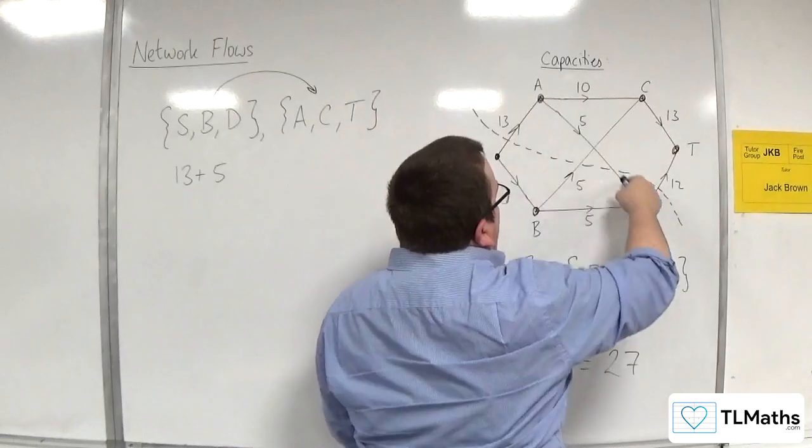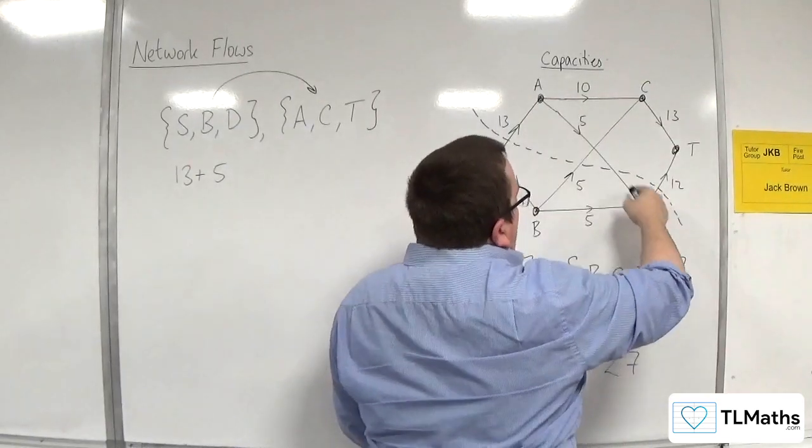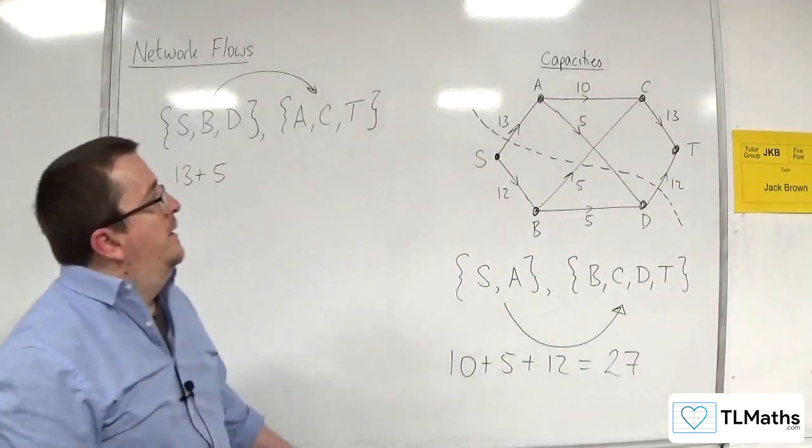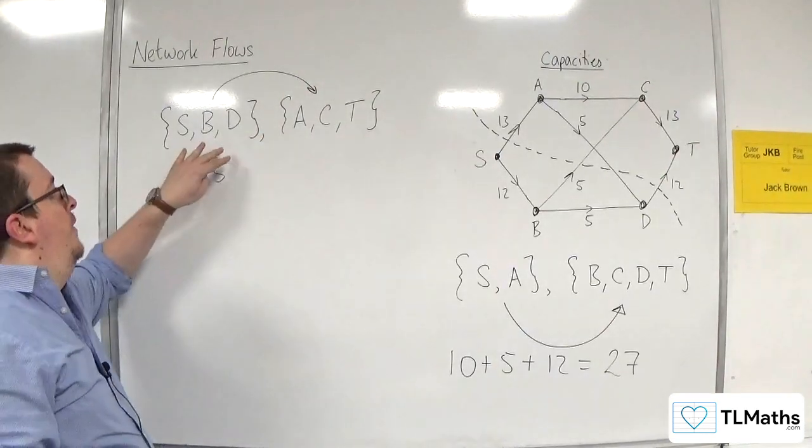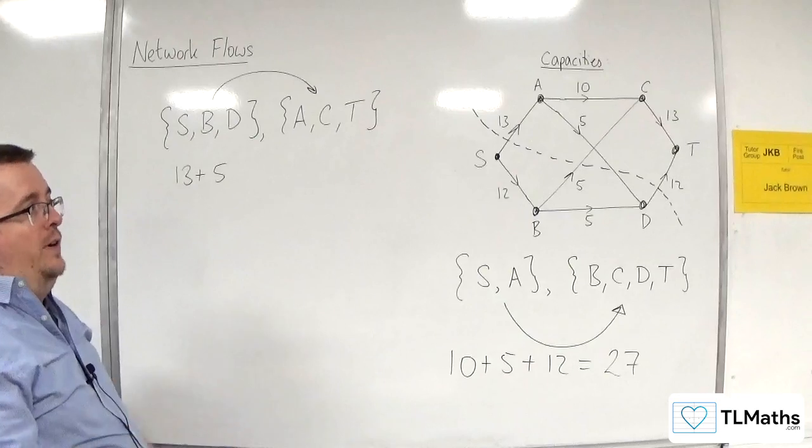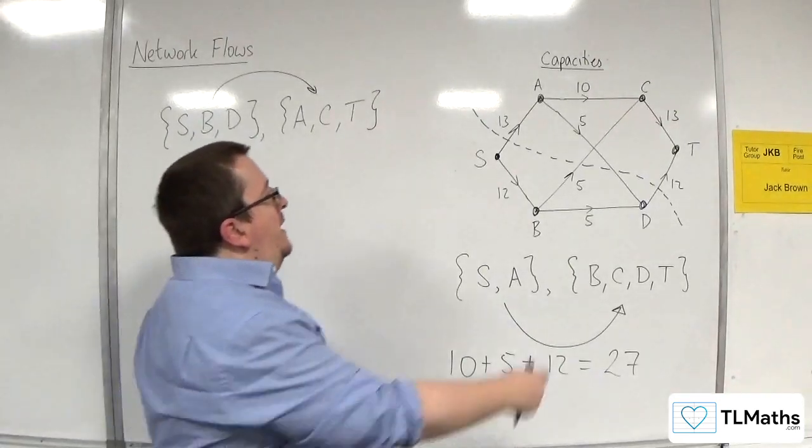Now the 5 going along from A to D, although that edge is being cut, you're going from one in the sink set there to one in the source set. So that's not included. So we ignore that one.